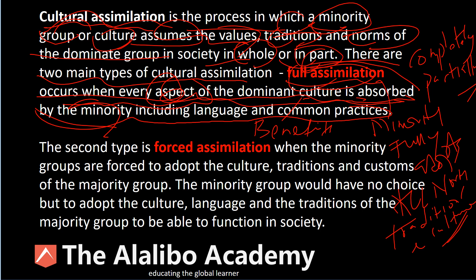They become part of that whole setup in society and become indistinguishable from the majority group — they speak the language, follow the traditions, adhere to the norms, and understand the nuances. The second type is forced assimilation. As the name suggests, this is where the minority group is forced to adopt the cultural traditions and customs of the majority group.